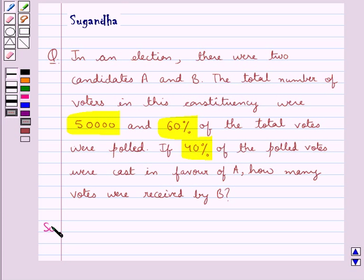Let's move on to the solution now. In the question we are given that the total number of voters is equal to 50,000.